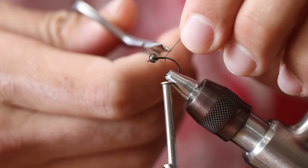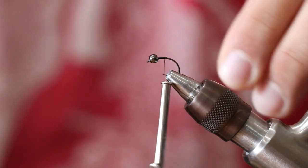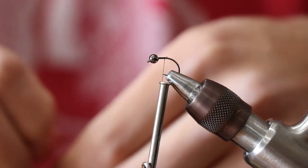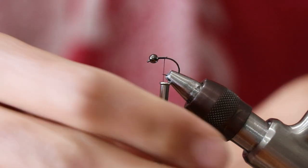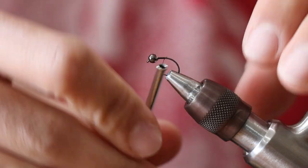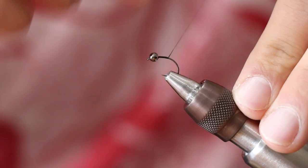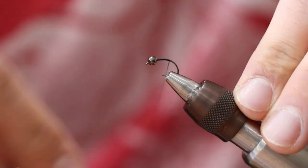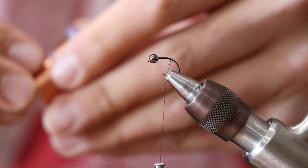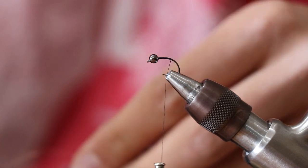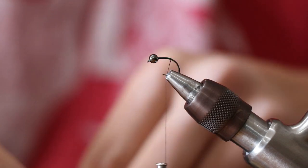I also, before I put my thread on, did do six wraps of 0.015 lead wire and basically just shoved it up underneath the bead. Then for the thread, I'm going to be using some black 70 UTC and I'm going to get my thread just past that hook point.